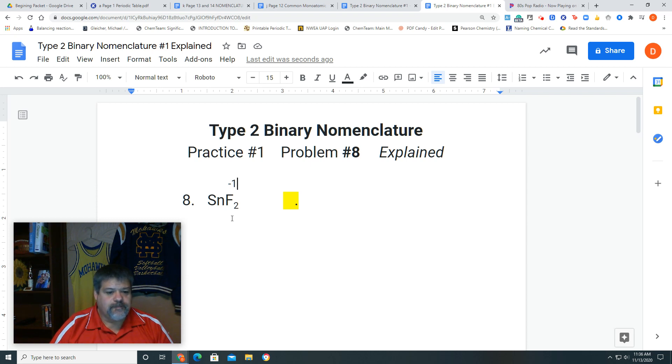There are two ways to do this. The first method: the total charge for fluorine is -1 times 2, which equals -2. This means tin's charge must be +2.